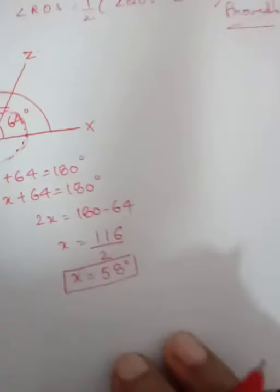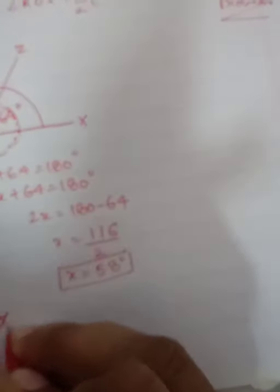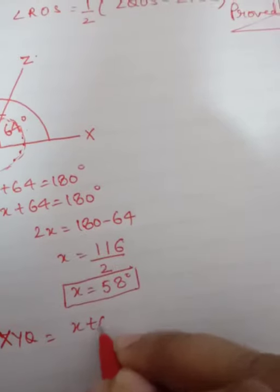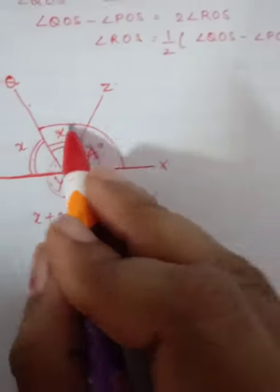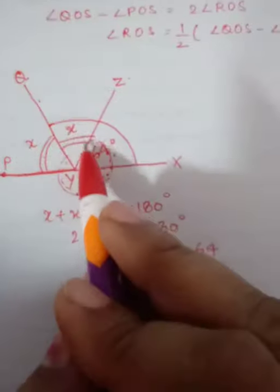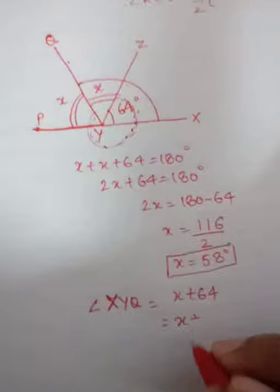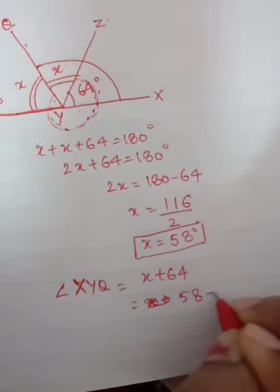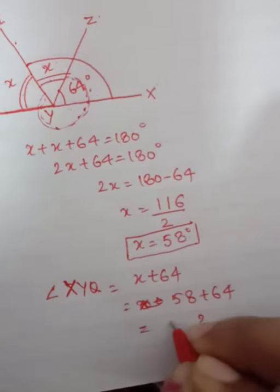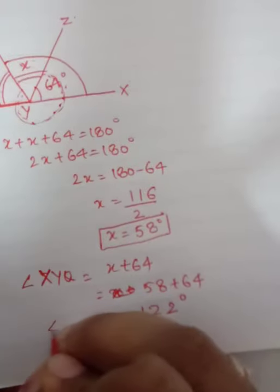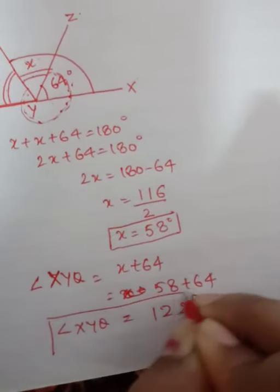So X equals to this is 116 by 2, X equals to 58 degrees. Now this is X equals to 58 degrees. You have to find angle XYQ. Now XYQ means X plus 64. XYQ, this is equal to X plus 64 means X is 58, so 58 plus 64, it means 122 degrees is the value of angle XYQ. This is the answer of first angle.